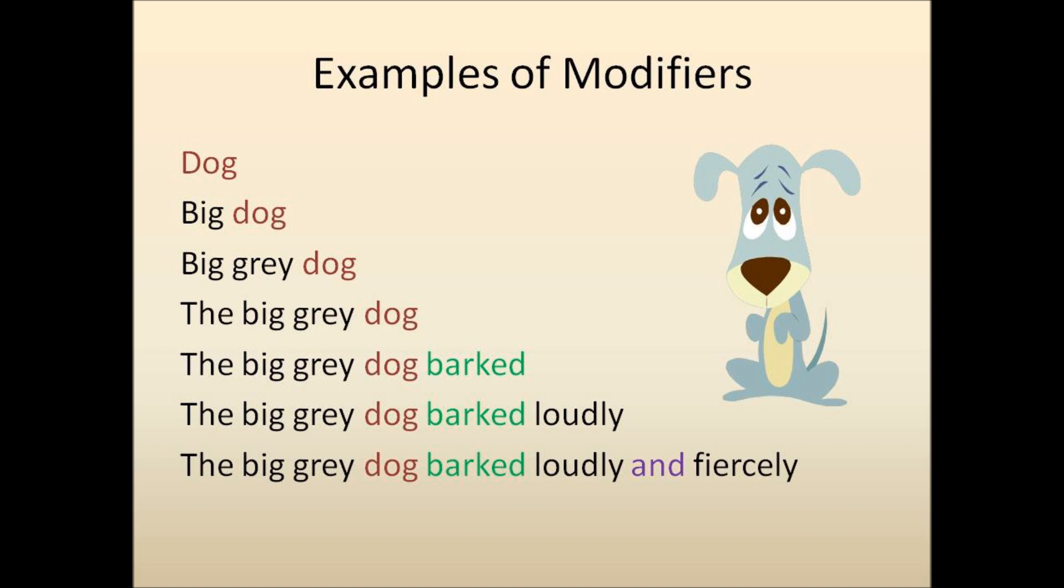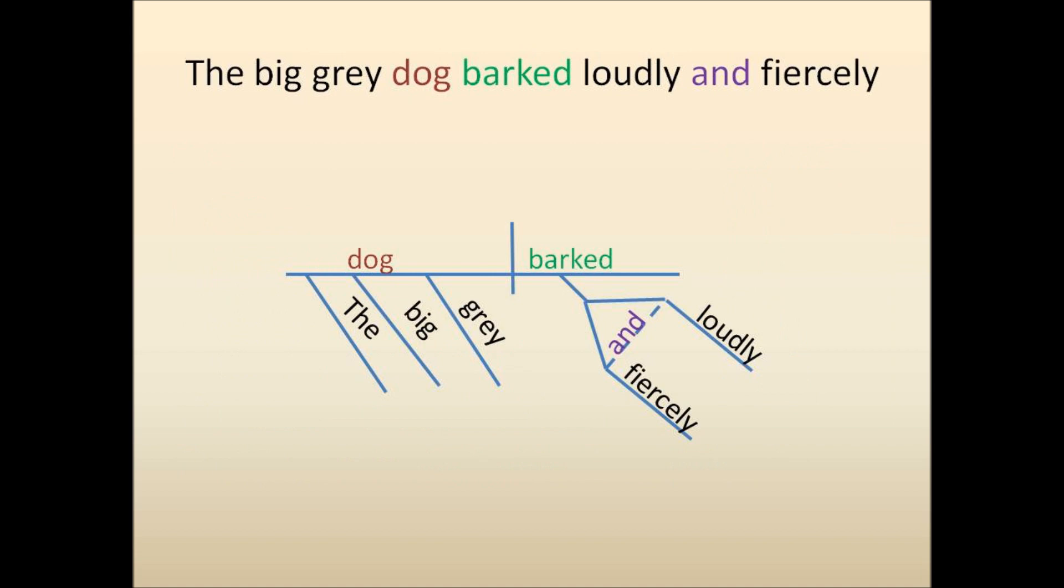In diagram form, this sentence would look like this. The big gray dog barked loudly and fiercely, where the modifiers are placed on an angle 45 degrees underneath the word that they modify.